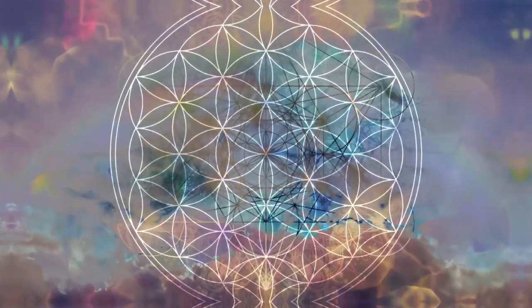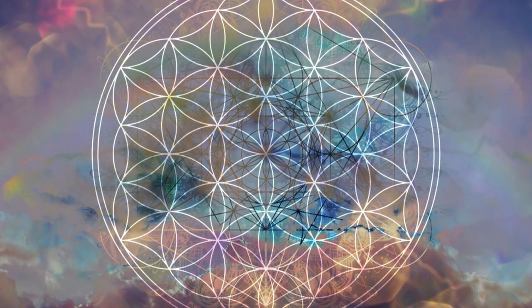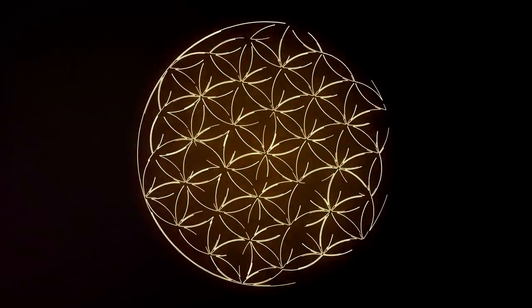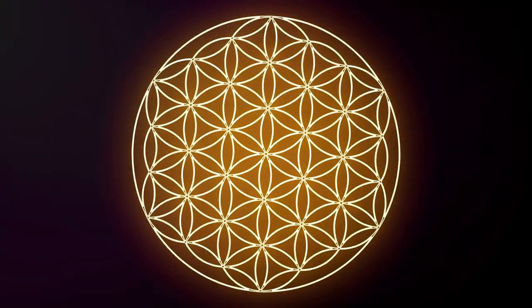One of the most well-known symbols in sacred geometry is the flower of life. The flower of life is a complex pattern made up of multiple evenly spaced overlapping circles. This symbol is found in many cultures around the world and is often associated with the creation of life, the universe and everything within it.